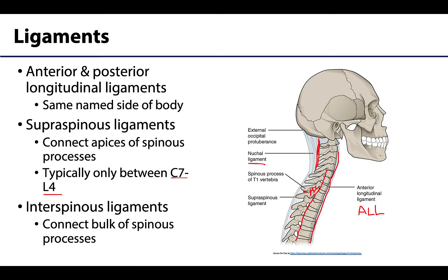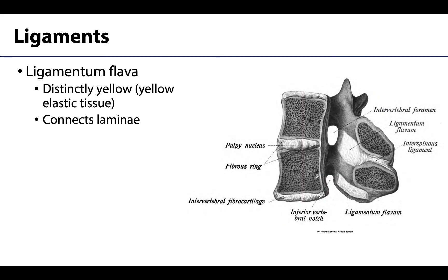The interspinous ligaments connect the spinous processes from their root to the apices. The ligamentum flava connects adjacent laminae — the flat portions of the vertebral arches. 'Flavus' means yellow, and though it's not visible in this black and white image, the ligamentum flava is a very distinct yellow, composed of yellow bands of elastic tissue. It resists separation of the laminae during vertebral column movements and helps preserve normal spinal curvatures. You can also see the interspinous ligaments here between the cut spinous processes.